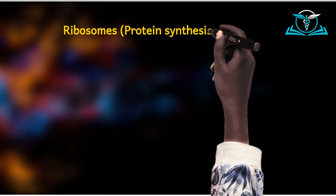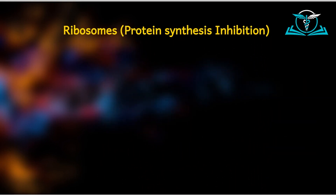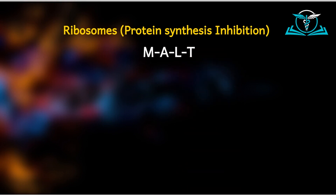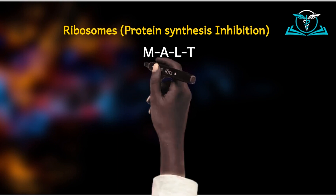We begin with those which work on the ribosomes, thereby inhibiting protein synthesis. Remember, we mentioned that the ribosomes are made up of two subunits — the 30S subunit and the 50S subunit. So which of them works on the 30S subunit and which targets the 50S subunit?